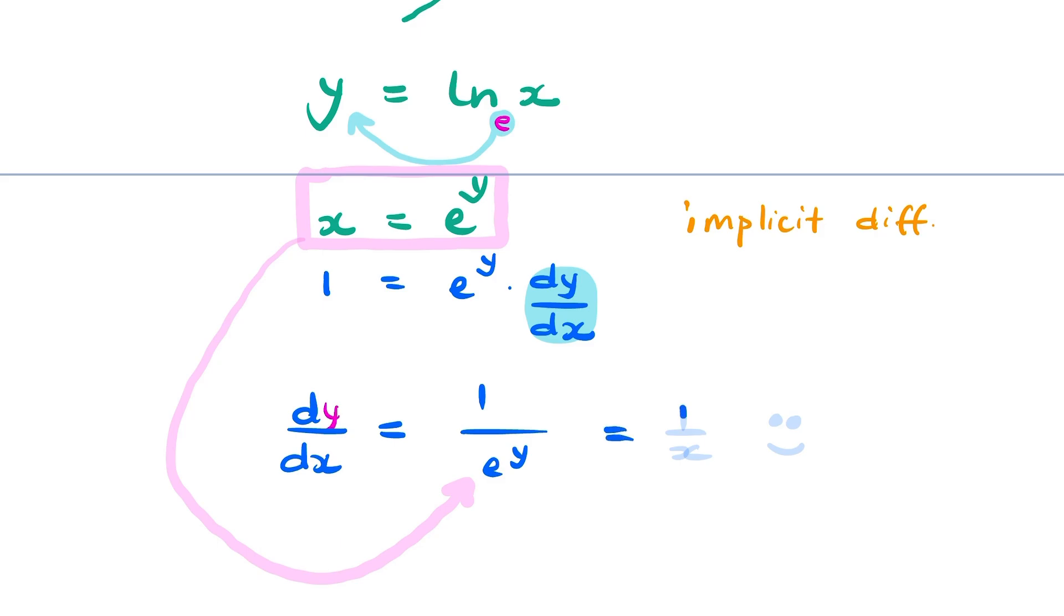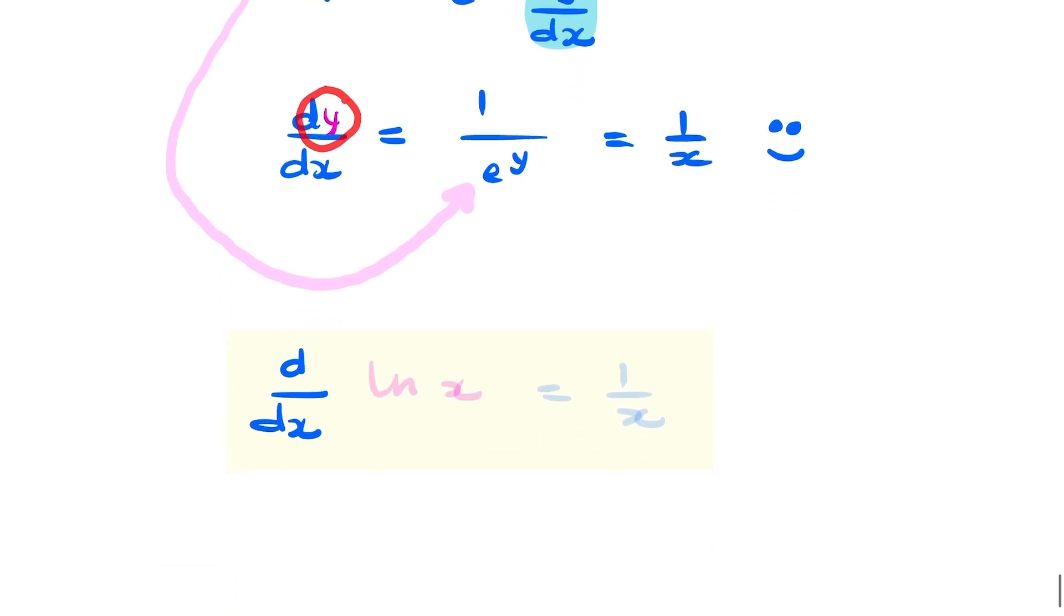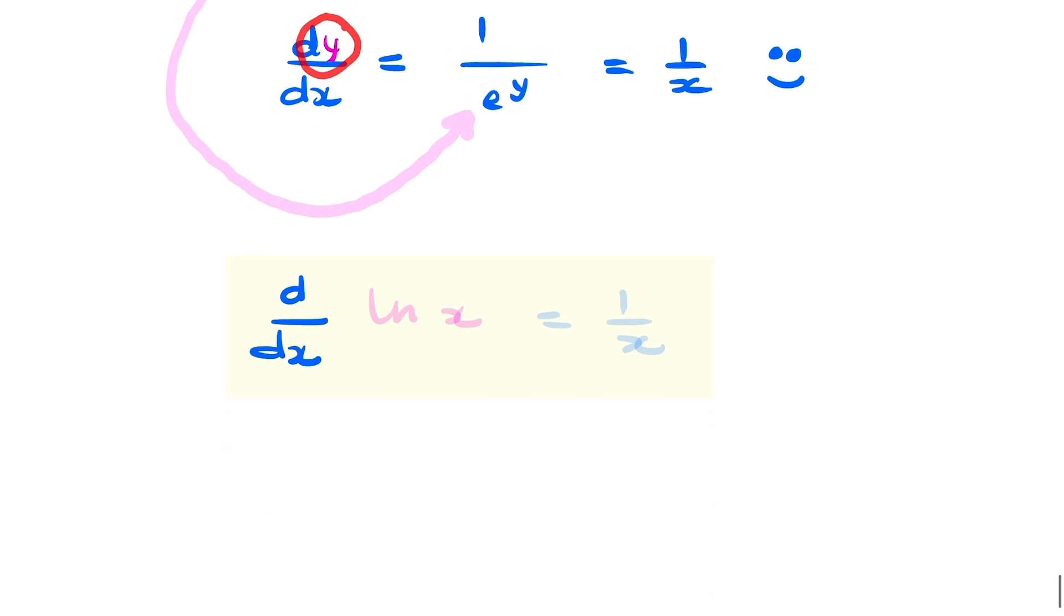That gives us 1 over x. And that's what we were trying to prove: that the derivative of ln x, dy by dx, is 1 over x. Remembering y is ln x, we can write d/dx of ln x equals 1 over x.